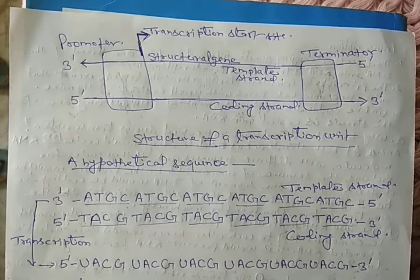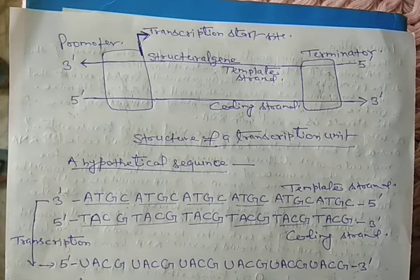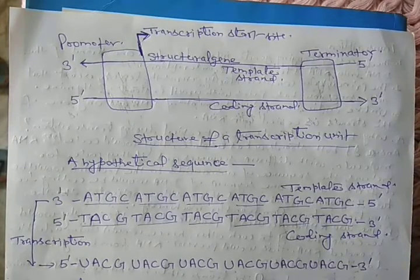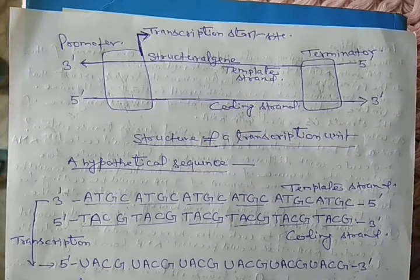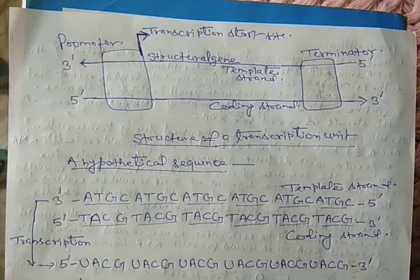The second reason is that if both strands were functional, from the same segment of DNA at the same time, two kinds of proteins would be synthesized having different sequences of amino acids. In that condition, the genetic transfer machinery would be disturbed. That is why only one of the strands acts as the template.